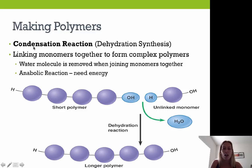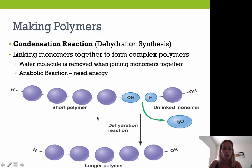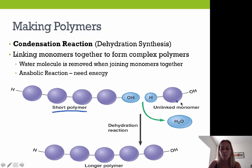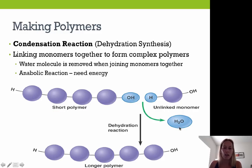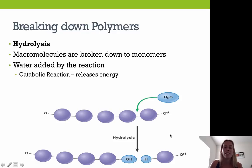Condensation makes you think of water — like water droplets on the outside of a glass in summer. Dehydration means you're losing water. In the diagram, we have a short polymer and an unlinked monomer. A hydrogen atom and an OH (hydroxyl) group pair up to form a bond, with the loss of water. That's our dehydration synthesis or condensation reaction.